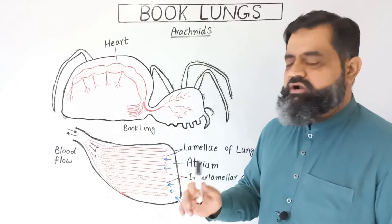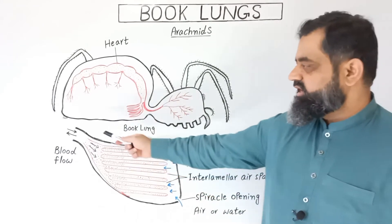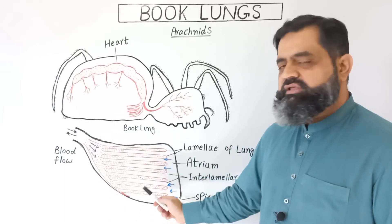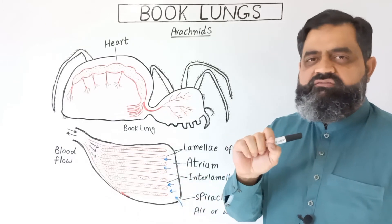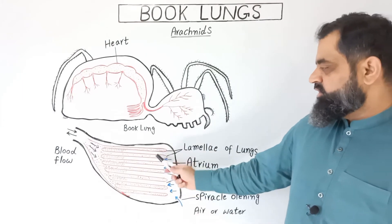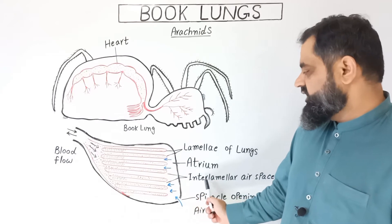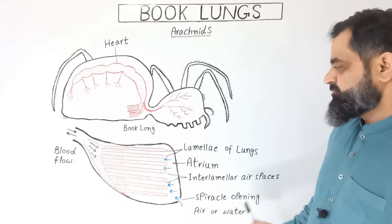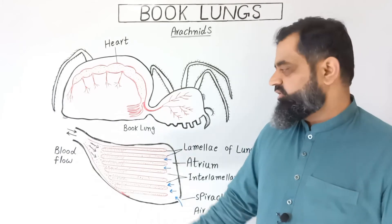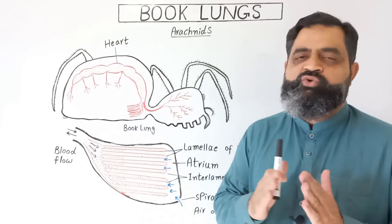When there are many lamella, these are known as lamellae — lamellae of lungs. Because this is a lung which is known as book lung, and inside this lung there are thin membranes which are known as lamellae. Between two lamellae there is a space which is known as interlaminar airspace. These lamellae are kept separated by raker-like structures which are present between two lamellae.